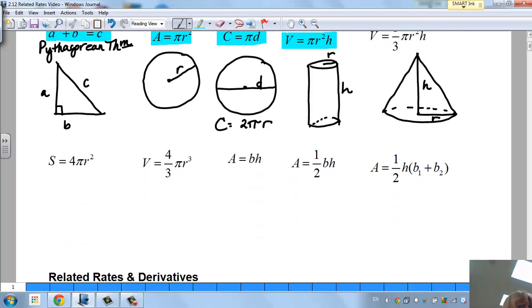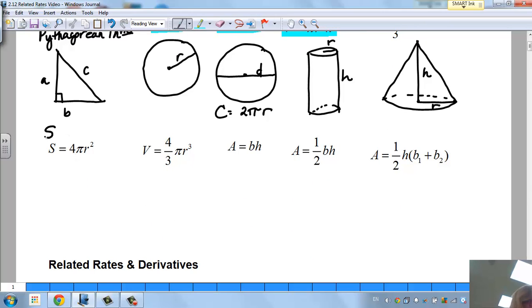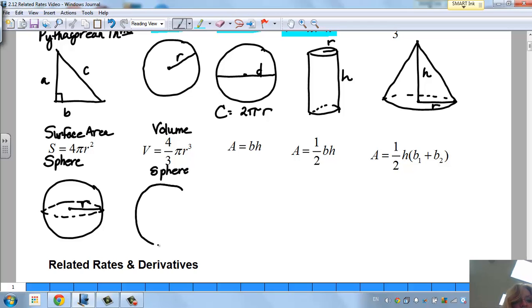Look at some other formulas and relationships we've done. S equals 4 pi r squared is the surface area of a sphere. A sphere is going to be this nice round ball. The radius r, if we had 4 pi times that radius squared, we'd find the surface area. This is the volume of a sphere. You can use this relationship of our sphere to find the volume of it.